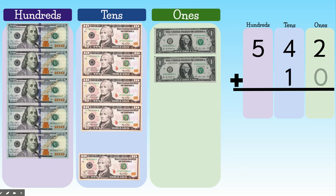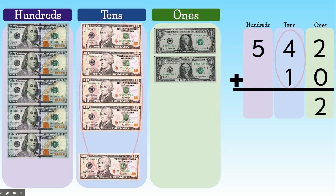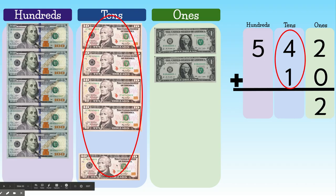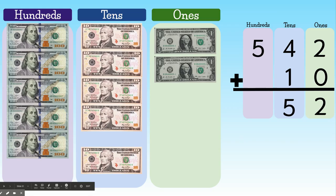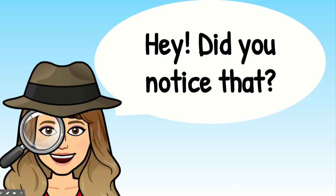Let's use the algorithm. So here we have 542 plus 10. We're going to start, start, start on the right in our ones place. 2 plus 0 equals 2. 4 tens plus 1 ten equals 5 tens. And then we're going to move to our hundreds. 500 plus zero hundreds. So 542 plus 10 is 552.